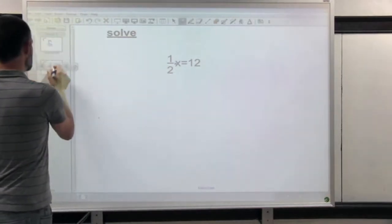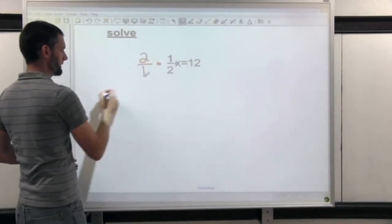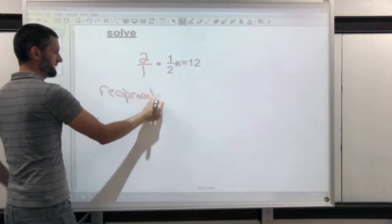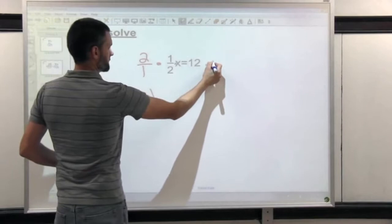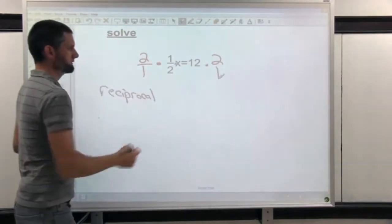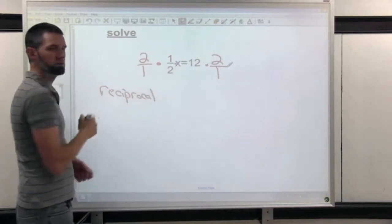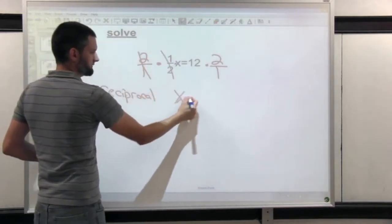Instead of dividing, you can multiply by the reciprocal. The reciprocal is that fraction flipped over. So if we multiply this side by two over one, two over one times one over two, the reciprocals, they cancel, and we just have x.